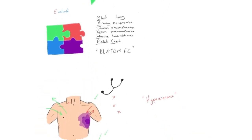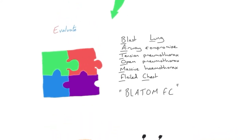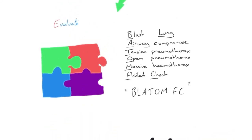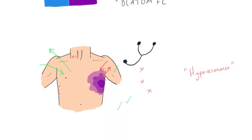Finally, E for Evaluate — putting everything together. At this stage we're thinking: if we've got poor chest movement, reduced air entry, hyper or hypo-resonance, what is it and do we need to treat it? The mnemonic BLATOMFC covers blast lung, airway compromise, tension pneumothorax, open pneumothorax, massive haemothorax, and flail chest segments. If we've done our FLAPS-12 assessment correctly, we should have been able to identify any of these occurring and treat accordingly.